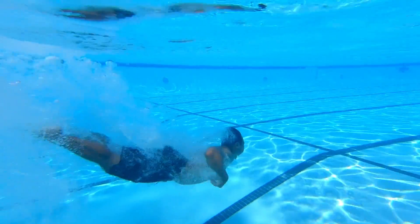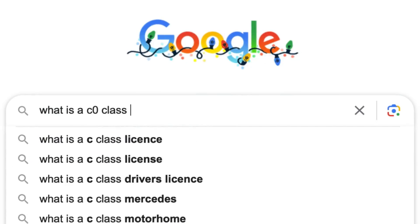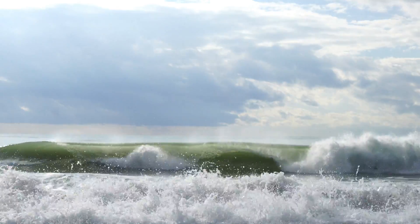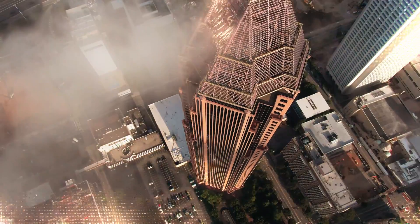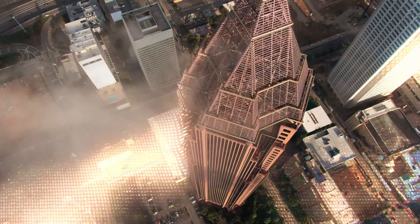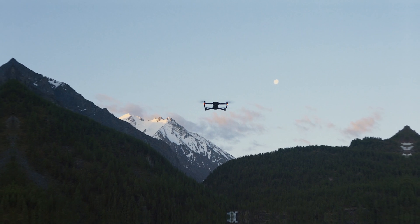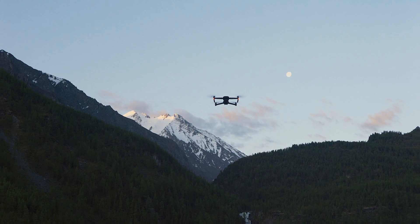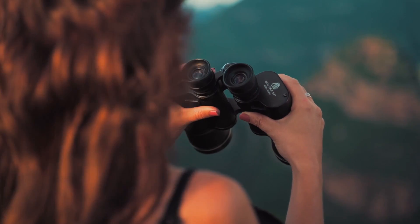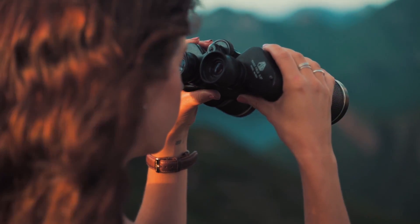Today we're diving into the world of drones, specifically the C0 class and a restriction that's making waves among the drone community worldwide. Class 0 drones have a specific requirement and one of the major constraints is the 120 meter height limitation. This limitation plays a significant role in shaping the drone experience for hobbyists and beginners alike. But before we explore the impact of this limit, let's understand the C0 class and its key specifications.